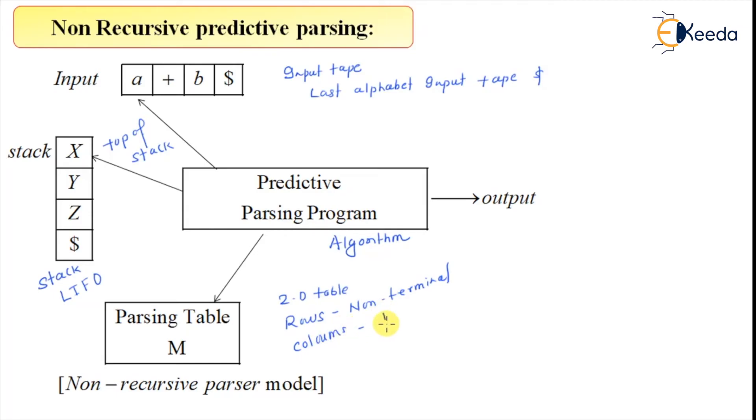Always this will happen that this arrow is pointing to a non-terminal, so M is pointing to a non-terminal X and the input is here, in this case is A. So this is a pair X and A and this entry will be searched in this parsing table.